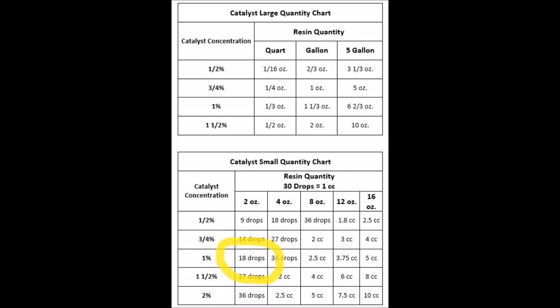Next, I am going to take my catalyst quantity chart to figure out how much MEKP I need to add to my polyester resin. To add 1% MEKP to two ounces of polyester resin, I need 18 drops of MEKP.